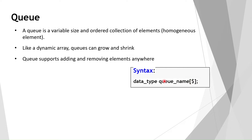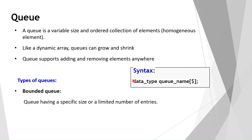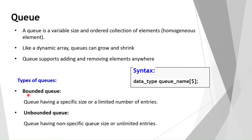Queues have two types: bounded queue and unbounded queue. A bounded queue has a specific or limited number of entries. An unbounded queue has no specific size or unlimited entries. If you give a particular size it becomes a bounded queue; if only the dollar symbol is used with no size, it is an unbounded queue.